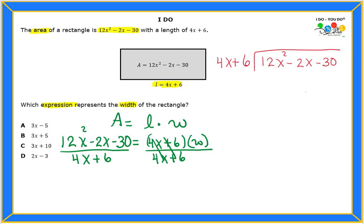So the first thing you're going to ask yourself is this: 4x times what will give me 12x²? That's the way we divide. So 4 times 3 is 12, so I know my coefficient is 3.